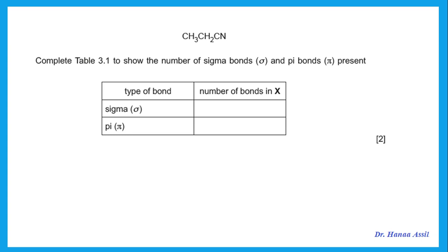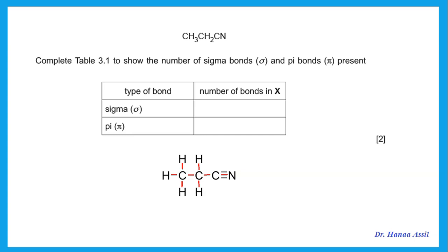Complete to show the number of sigma bonds and pi bonds present in this molecule. Every single bond is a sigma, and the triple bond has one sigma. So there is a total of eight sigma bonds. For pi: the triple bond is one sigma and two pi bonds, giving two pi bonds.